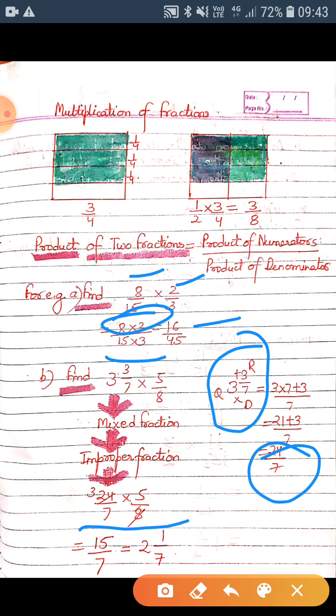If we can further simplify, as eight goes into twenty-four three times, we can further simplify this. Now the numerator here is three. Three into five will be fifteen, and the denominator will be seven.